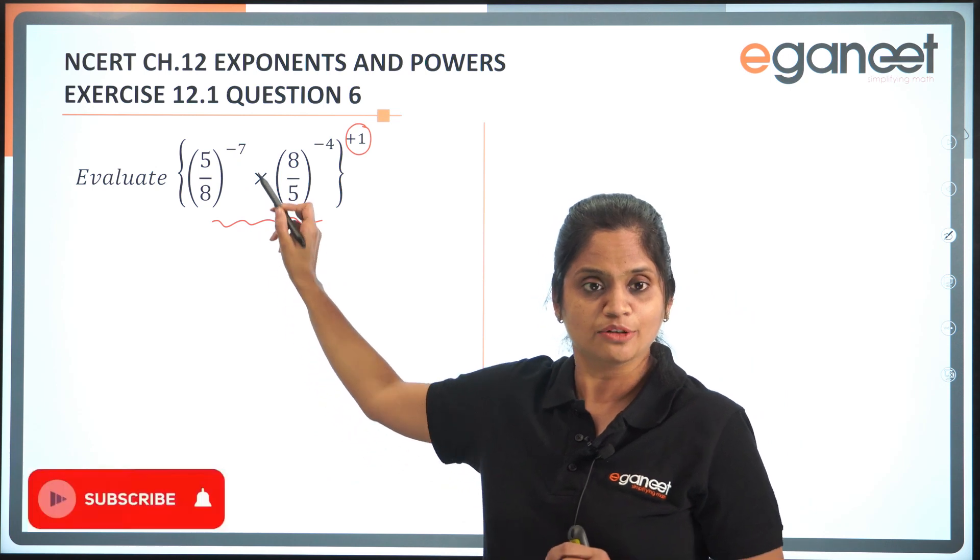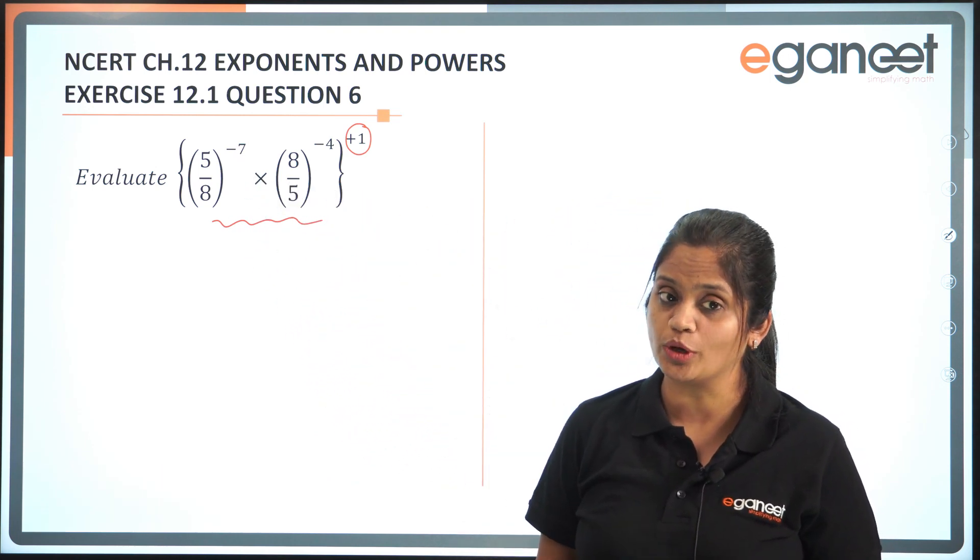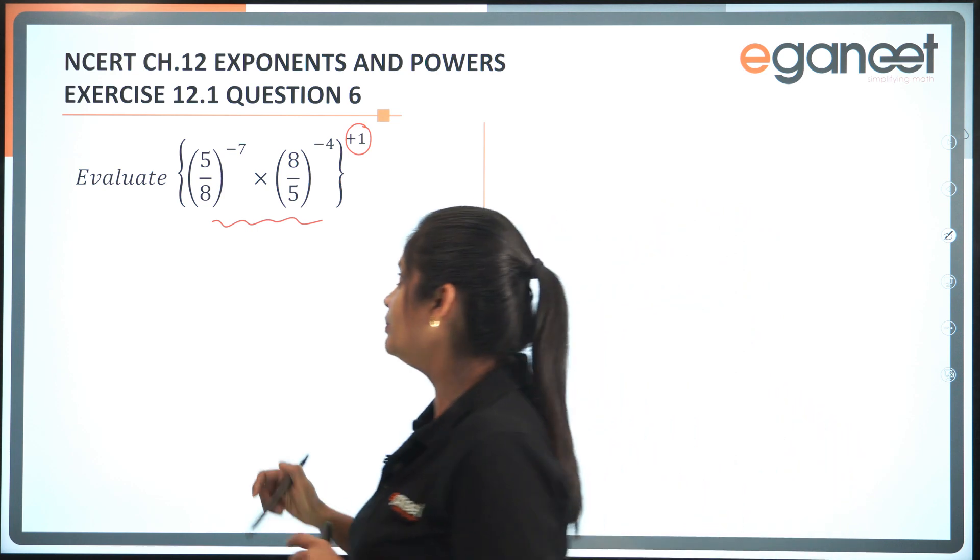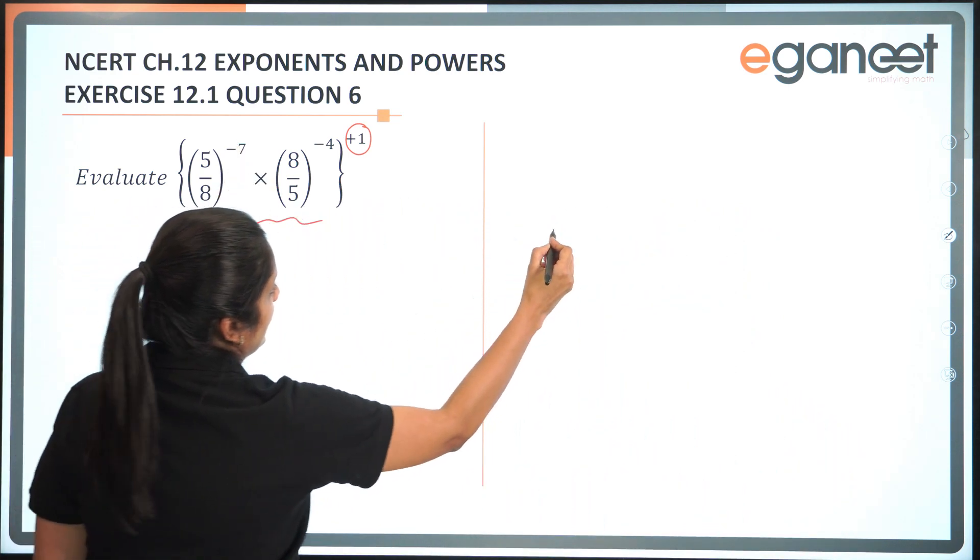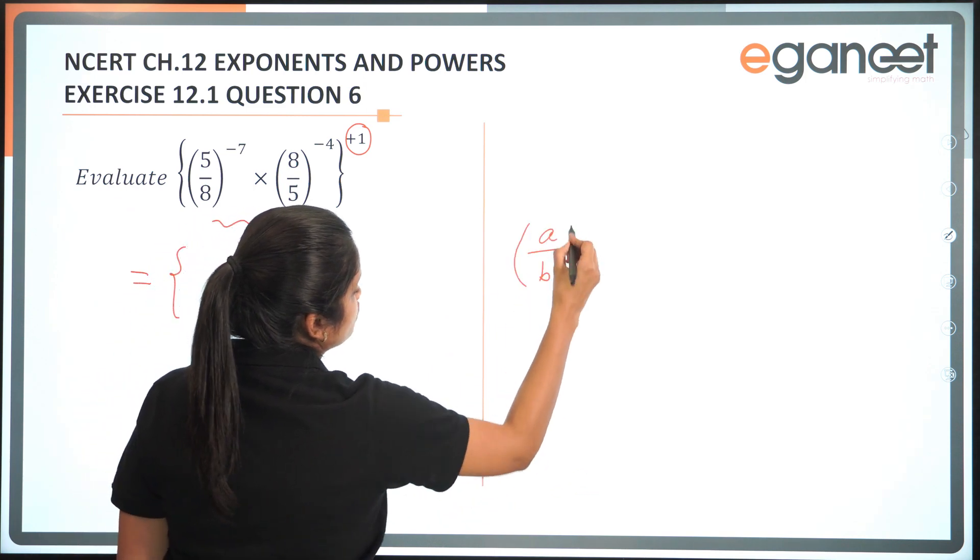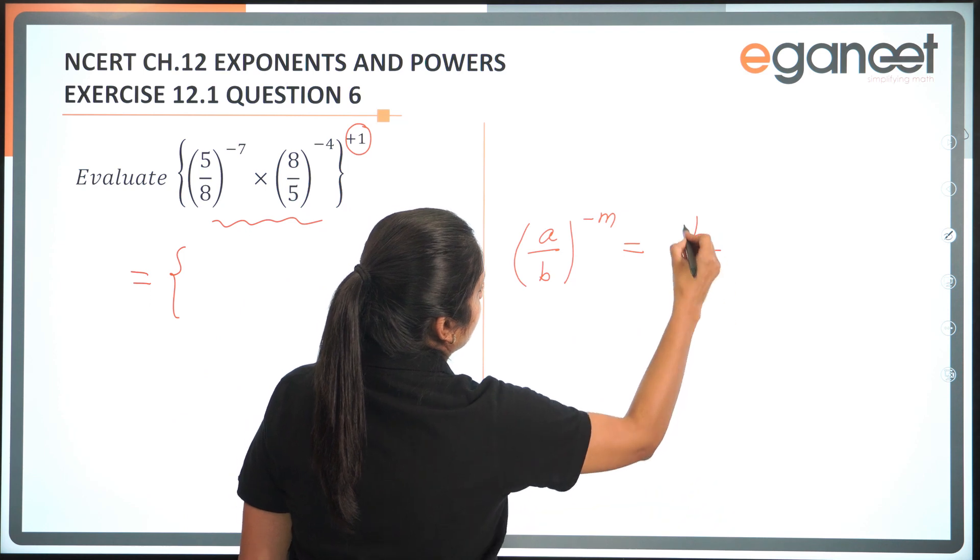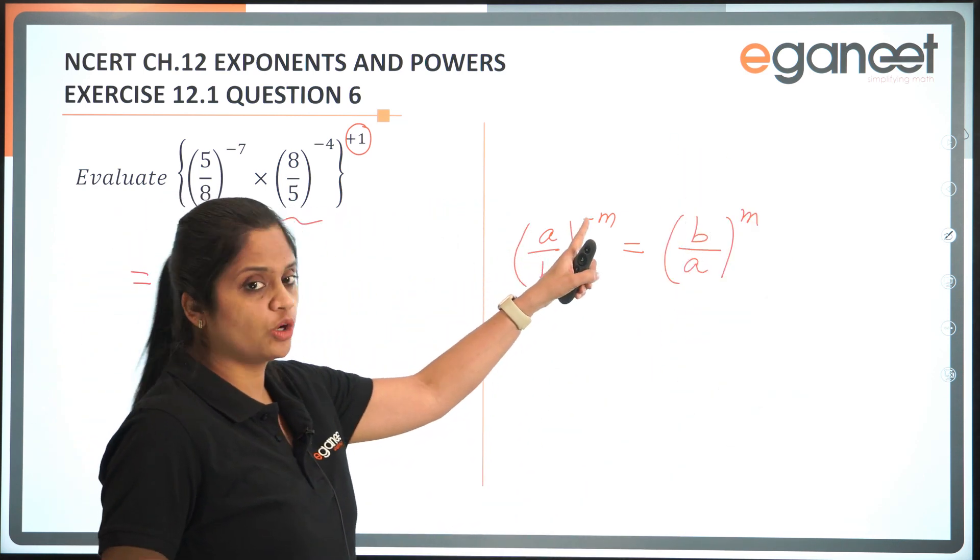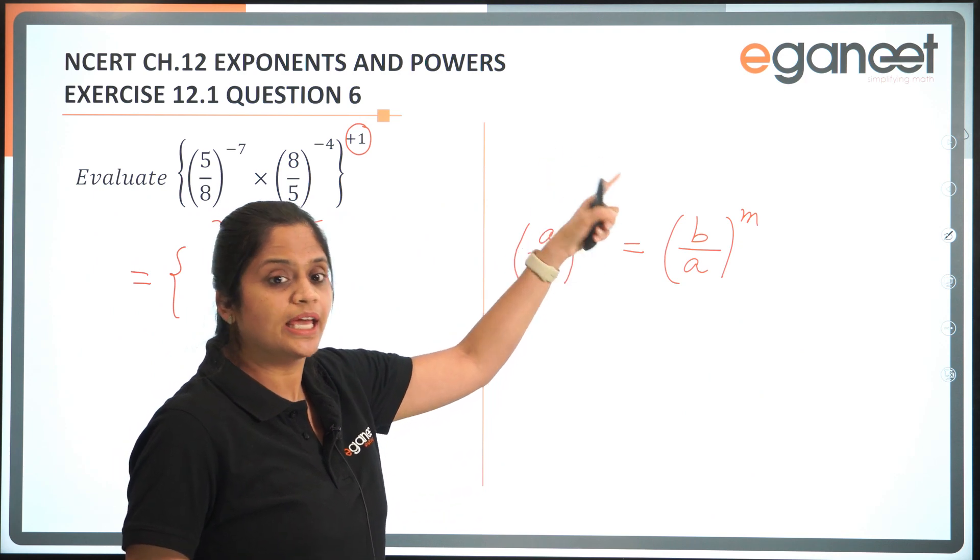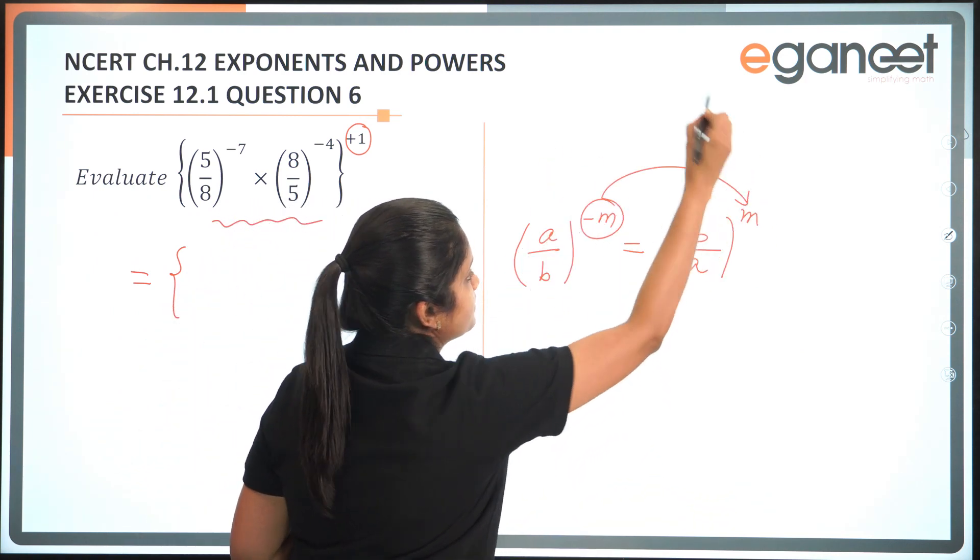Observe the two bases 5 by 8 and 8 by 5. Clearly they are reciprocals of each other. Let me just make them same. So I know that a by b raised to the power minus m is b by a raised to power of plus m. And why do I do that? Because negative exponent reciprocates the base and the exponent becomes positive.